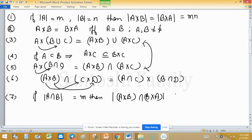Result 8: A is a subset of B and C is a subset of D, then A cross C will be subset of B cross D.